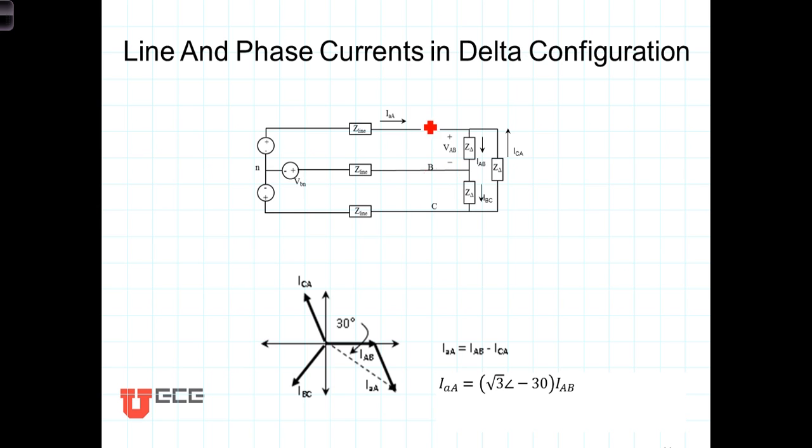On the other hand, the line current coming into this A node consists of three currents here associated with this node.